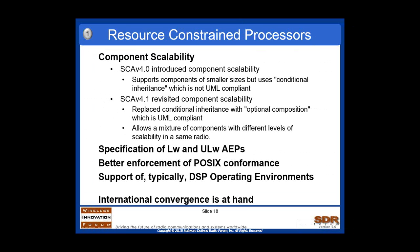The specification of lightweight and ultra-lightweight AEPs — which is a WINF spec largely endorsed in elaborating the SCA 4.1 — was one of the additions of 4.1 compared to 4.0. This improved the technology readiness level by one digit compared to what was available in 4.0, and is quite useful for most resource-constrained processes. Along those lines, there is better enforcement of POSIX conformance for the lightweight and ultra-lightweight specifications.